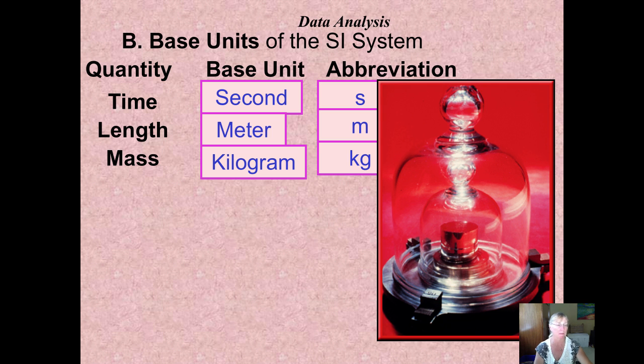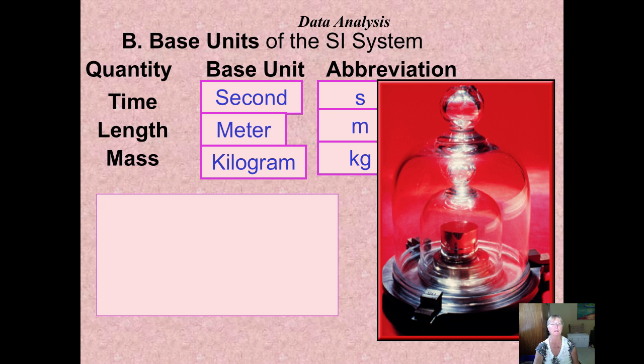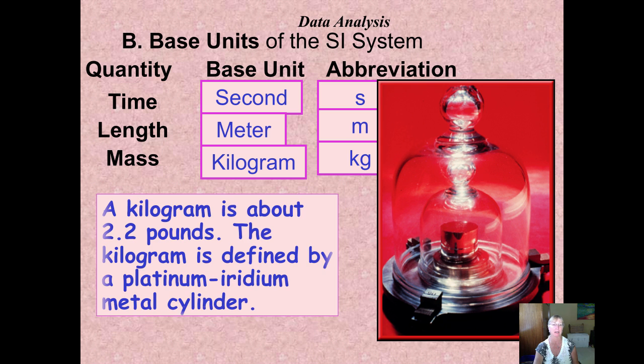Mass is measured in kilograms, kg. In chemistry, we don't use kilograms too often. There is the actual physical object, a kilogram, I believe a platinum at the national standards, upon which all other kilograms are based.